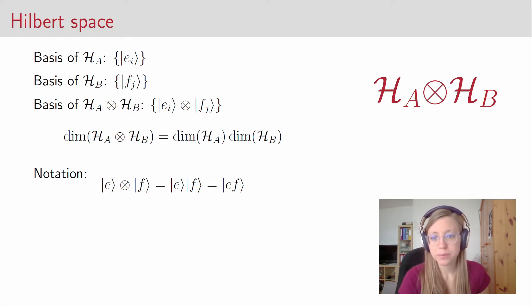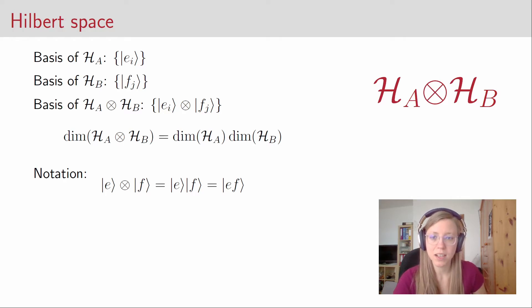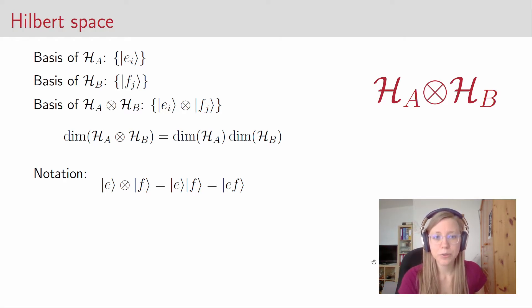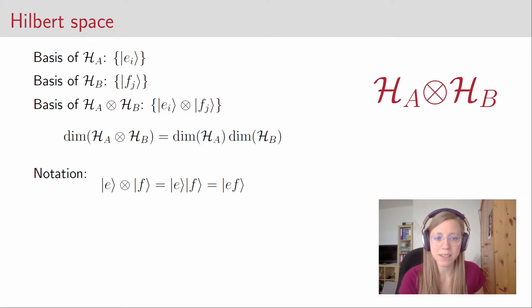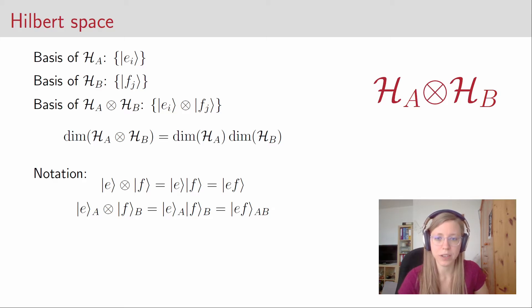A short comment on notation: above I wrote out the tensor product of states explicitly, but this is lengthy. We can make our lives easier and leave out the tensor product symbol — whenever two ket vectors appear next to each other, this is the same as their tensor product. We can go one step further and write the symbols for both vectors into one ket vector. If we want to indicate that vectors belong to system A or system B, we put subscripts on the vectors.